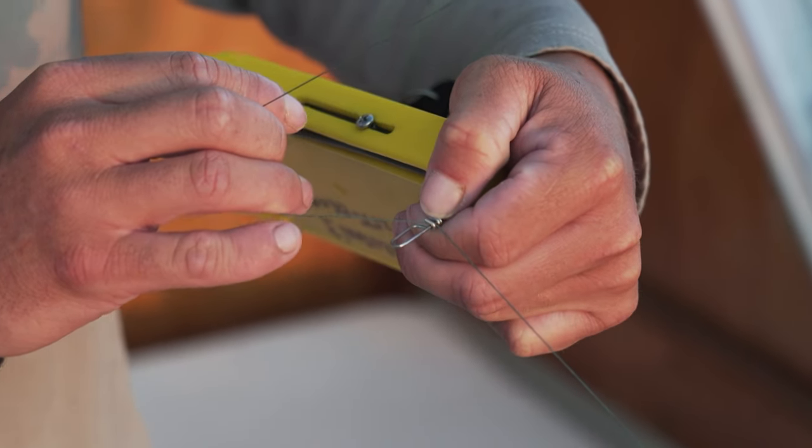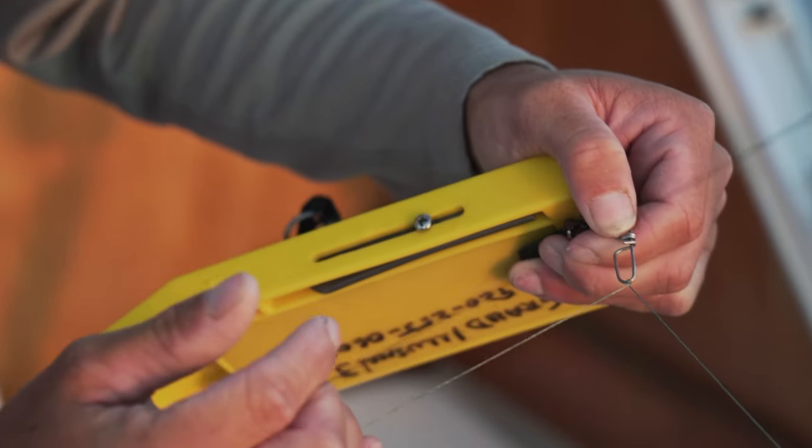You get that braid right in front, and you kind of just roll your wrist right through, and that braid will get on.